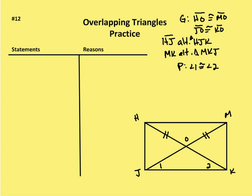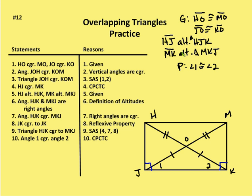Let's go through and mark up the diagram. HO is congruent to MO — I've marked those with two tick marks. JO is congruent to KO — again, two tick marks. HJ is the altitude to HJK, so I have a right angle at HJK. MK is an altitude to MKJ, so here's my right angle. I want to prove that angle 1 is congruent to angle 2. I also know that angle JOH is congruent to angle KOM because they're vertical angles — vertical angles are congruent.